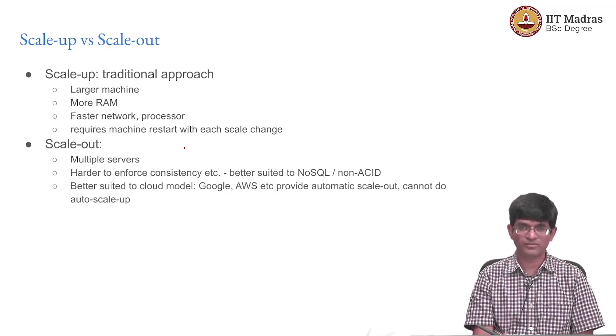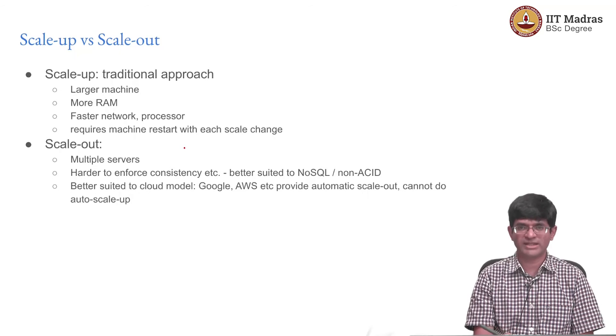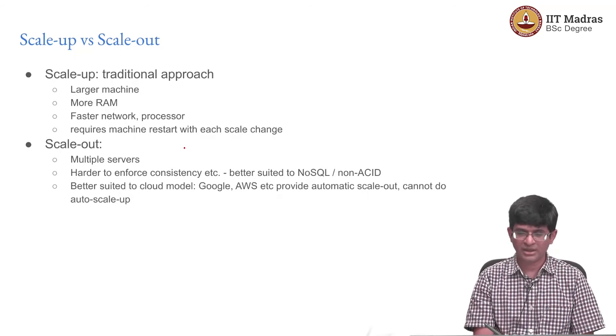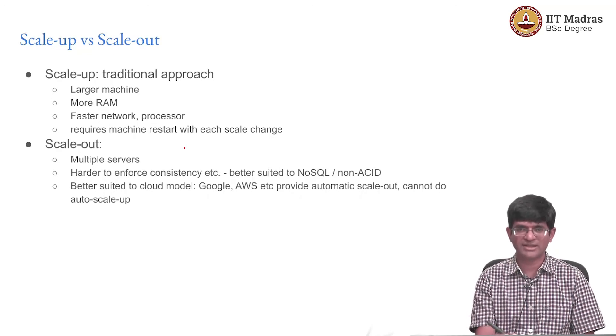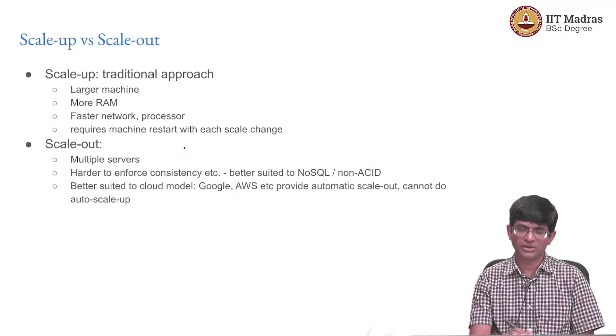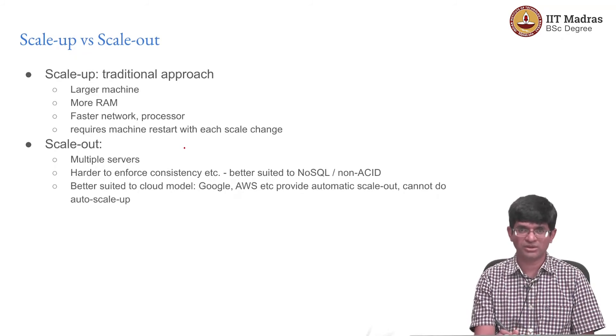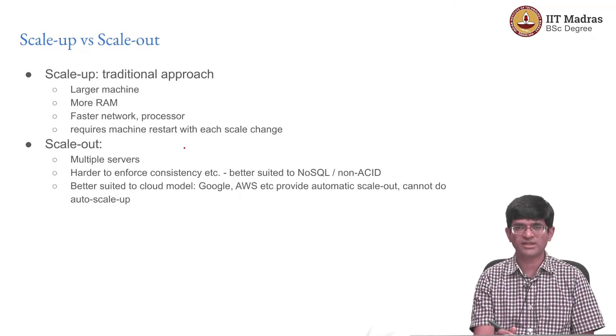Scale-out is very well suited to the modern cloud-based approach. The problem is it's not particularly good for ACID kind of databases because you have that consistency problem to maintain. That's the key to why NoSQL is really popular in these kinds of applications. As long as you can accept this notion of eventual consistency, you can make use of this kind of scale-out, which means just adding more servers, which can be done at runtime pretty fast.